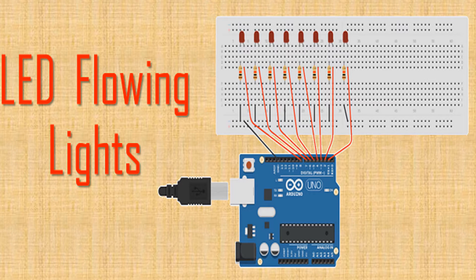Hello everyone. In this video, let us learn LED flowing lights. We will use an Arduino to control eight LEDs and use TinkerCAD software to simulate the project. We will light up eight LEDs successively and dim eight LEDs one after the other successively. It is similar to blinking a single LED using Arduino.